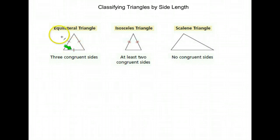There are only three classifications here. There's equilateral, where all three sides are exactly the same length. There's isosceles, where at least two of the sides are the same length, and notice they are marked as congruent with hash marks. And then there's scalene, where there are no congruent sides. None of the sides are the same length.